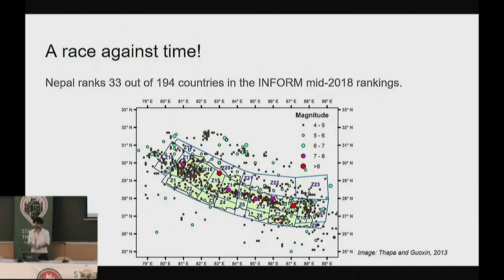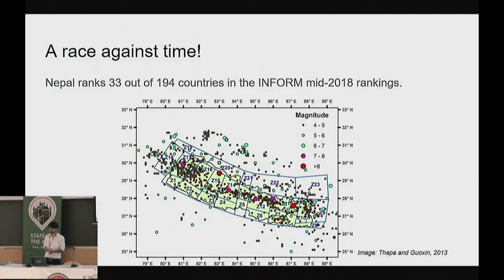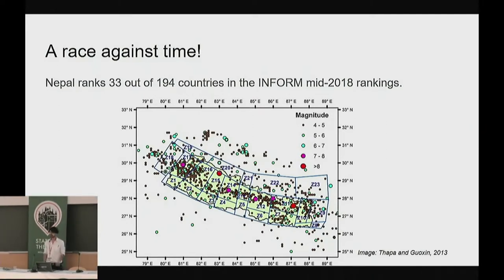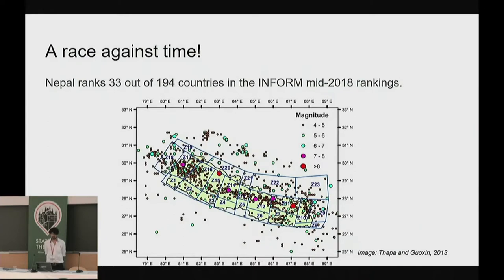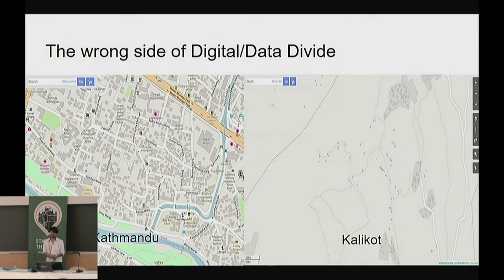Nepal is one of the most vulnerable countries in terms of disaster risk. Nepal ranks 33 out of 194 countries in the risk management index. The image on screen shows all recorded earthquakes of different magnitudes, and as you can see, the risk for earthquakes is spread almost evenly throughout the whole country. But even though the risk is spread very evenly, the availability of map data that helps us deal with crises is not spread so evenly.